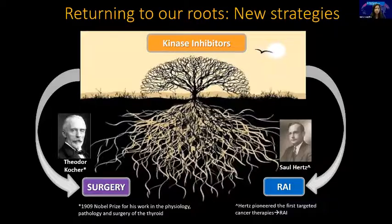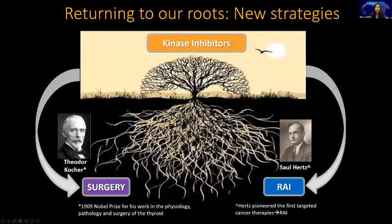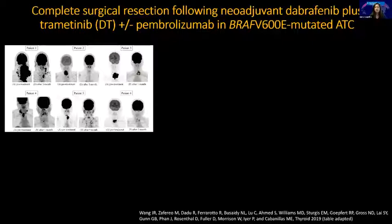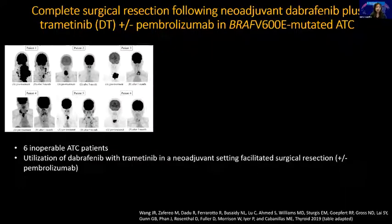I call this part of the talk 'returning to our roots.' We went crazy for a long time with kinase inhibitors, then came to the realization that's not the end of the story because all patients end up progressing. Our strategy is basically a multimodal approach using kinase inhibitors while still using surgery and radioiodine. For ATC patients with a BRAF mutation, we put them quickly on a BRAF/MEK inhibitor, then watch to see if they have tumor shrinkage and become resectable — almost none of these patients are resectable at baseline.